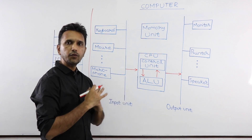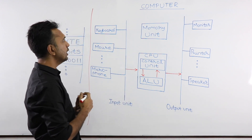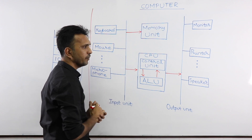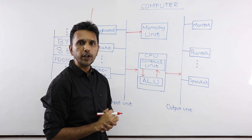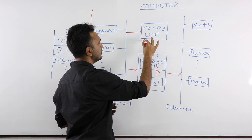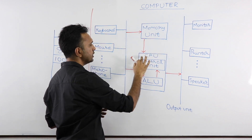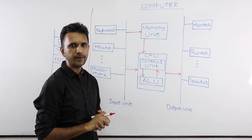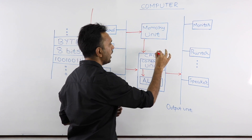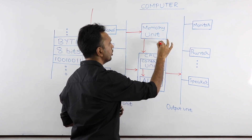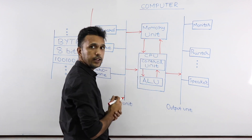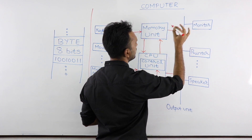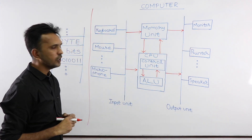Alternatively, the input unit may give the two numbers first to the memory unit, which then gives them to the CPU. The ALU does the calculation and the result 11 is passed back to the memory unit, which then gives it to the output unit. That is the way things work in a computer.